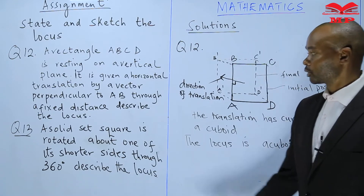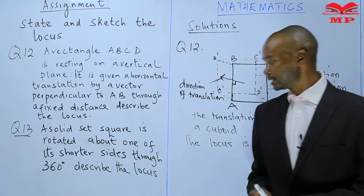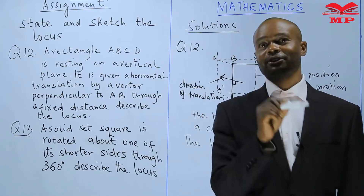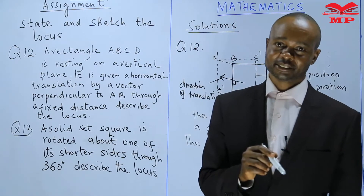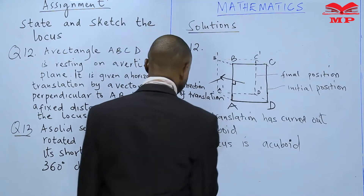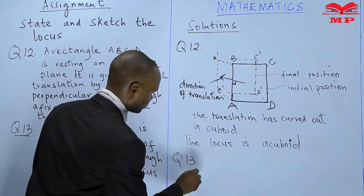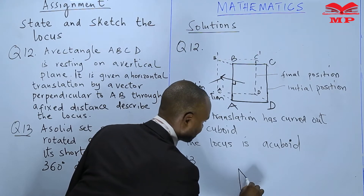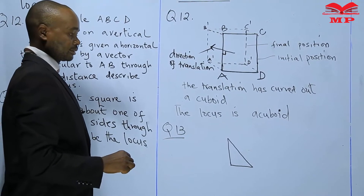We go to Question 13. A solid set square is rotated about one of its shorter sides through 360 degrees. You need a sketch. Before you go to the sketch — is a set square a line or a plane? A set square is a plane. So as we go to the sketch for Question 13...